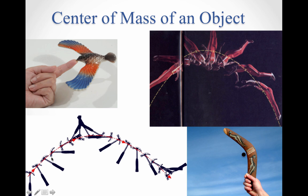The same thing is true for this hammer that's been thrown and is rotating. If we take a look at the center of mass of the hammer, which is right here — closer to the hammer head than to the handle — and we plot exactly where the center of mass was along every point the hammer was moving, we would see that it follows a nice simple parabolic trajectory rather than the complex rotational motion that you see visually.